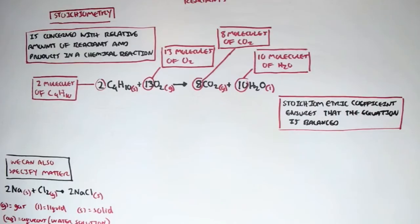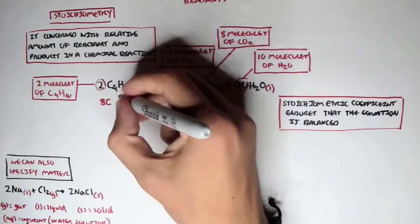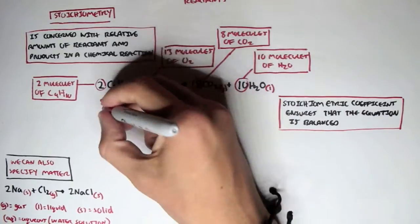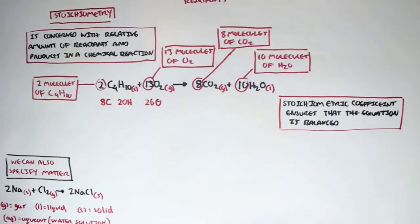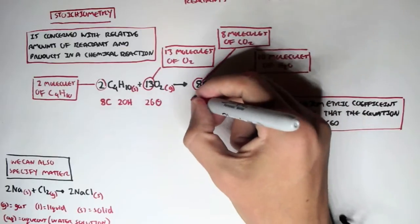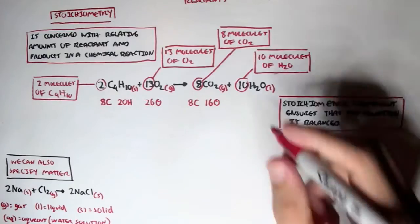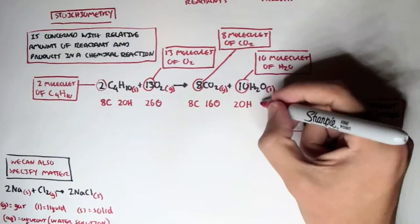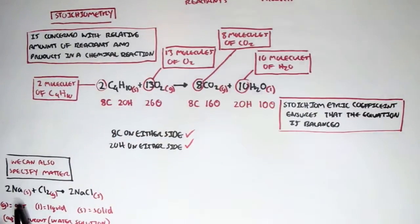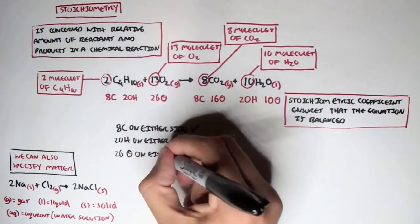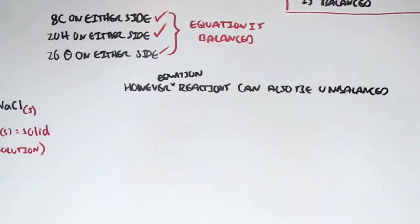For the reactants: for carbon, 2 times 4 gives us 8 carbons; hydrogen 2 times 10 gives us 20 hydrogens; for oxygen, 13 times 2 gives us 26 oxygens. For the products: carbons, we have 8 carbons; oxygen we have 16 (8 times 2); hydrogen we have 10 times 2, which is 20 hydrogens; and oxygen we have 10 oxygens. We can see that we have 8 carbons on either side, 20 hydrogens on either side, and 26 oxygens on either side. Therefore, this chemical equation is balanced because we have the same amounts of elements on either side.